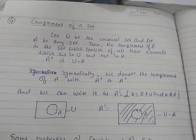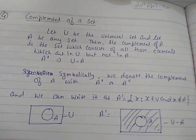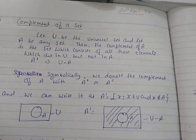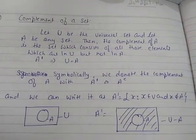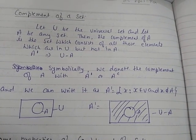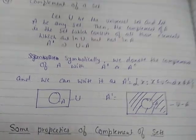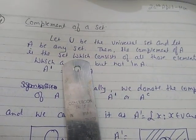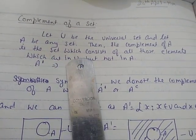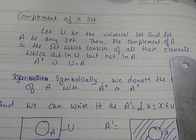In this video I am going to explain two topics: complement of a set in Exercise 1.5, and practical problems on union and intersection of two sets in Exercise 1.6. First of all I am going to start with complement of a set. Let U be the universal set and A be any set. Then the complement of set A is the set which consists of all those elements which are in U but not in A.